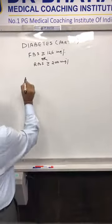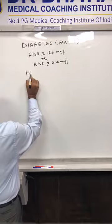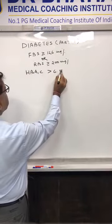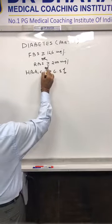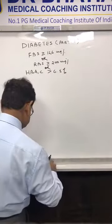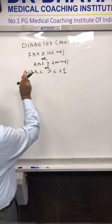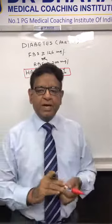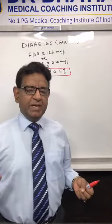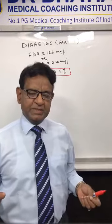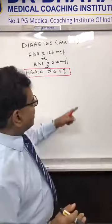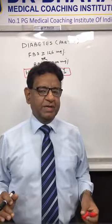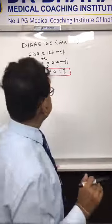Now a new thing has come up: HbA1c more than 6.5% is also diabetes. This is a new diagnostic criterion. Till now we knew that HbA1c tells you the sugar value for the last three months — that is still true — but now HbA1c more than 6.5% is a new additional diagnostic criteria of diabetes.